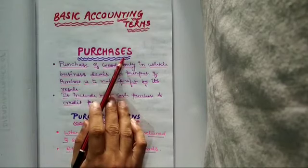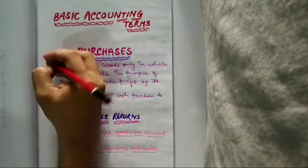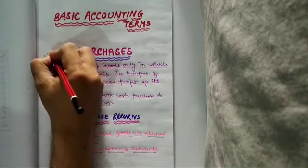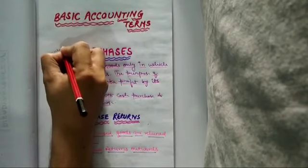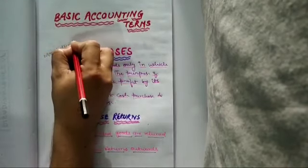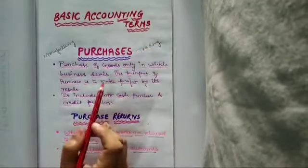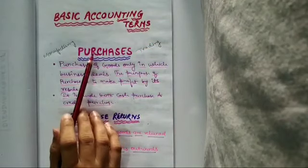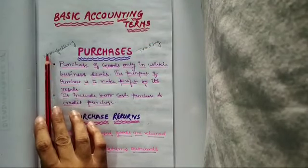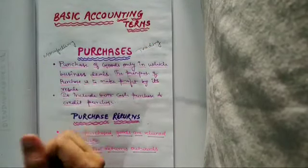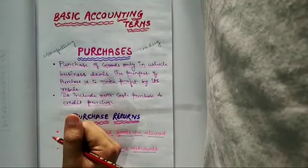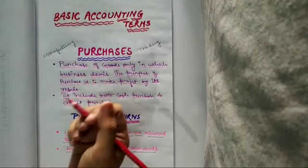Now business is of two types: manufacturing and second one is trading. So the goods or purchases for manufacturing business is the raw material which the business purchases to produce some finished product.